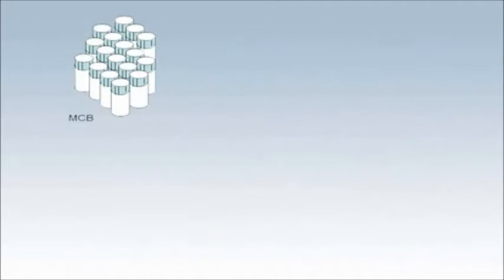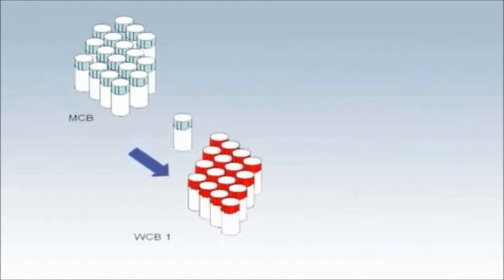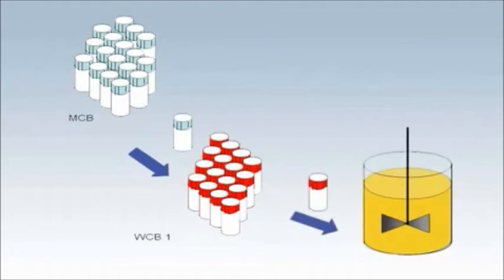This master cell bank may be in the order of 50 to 200 or more ampoules. One master cell bank vial will then be resuscitated to generate a working cell bank or WCB. Cultures will then be generated from the working cell bank to provide cells at the required passage.